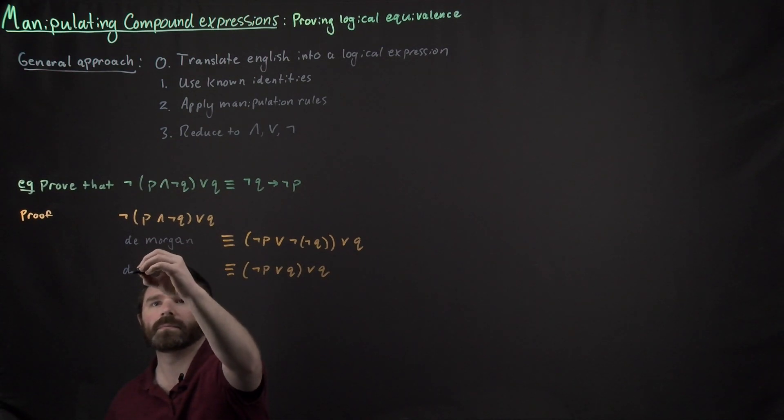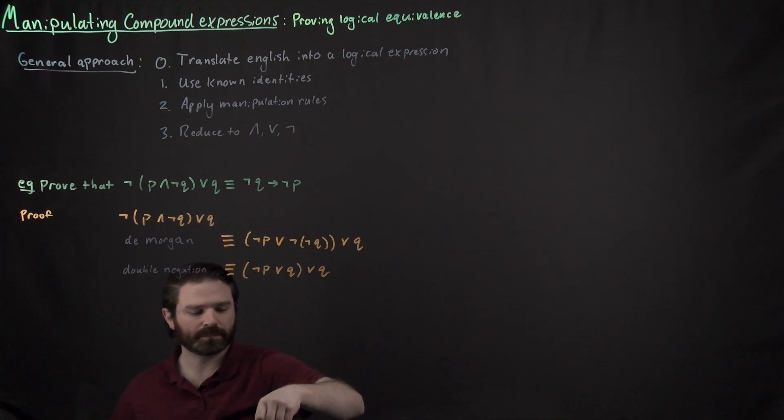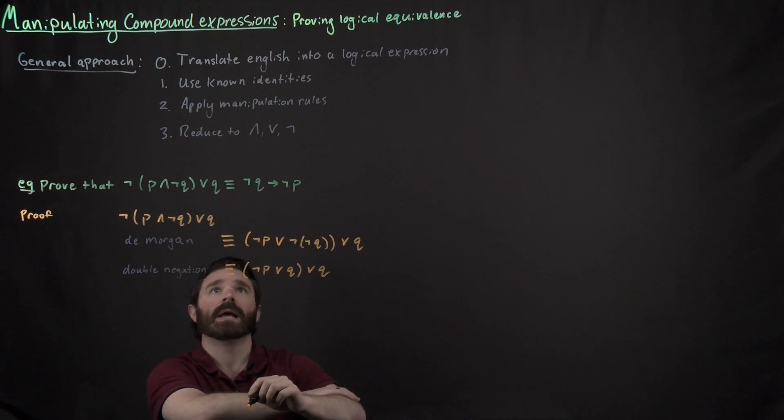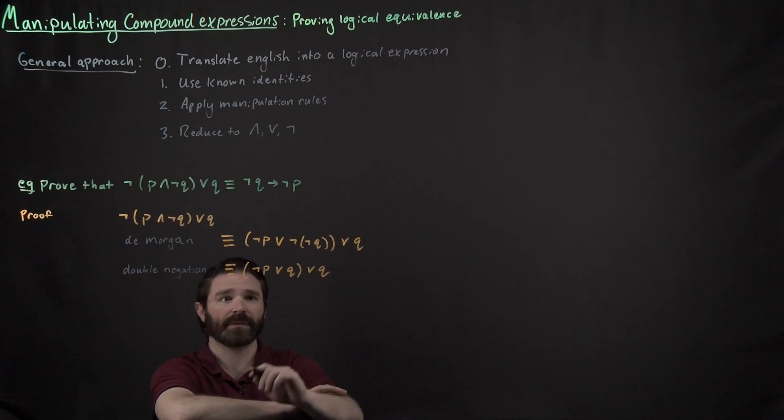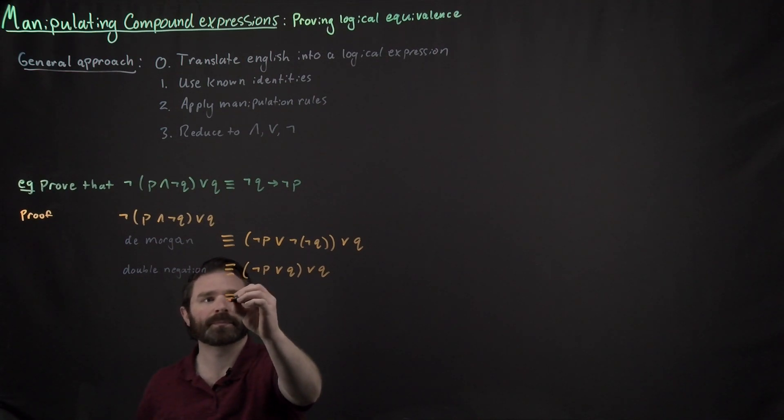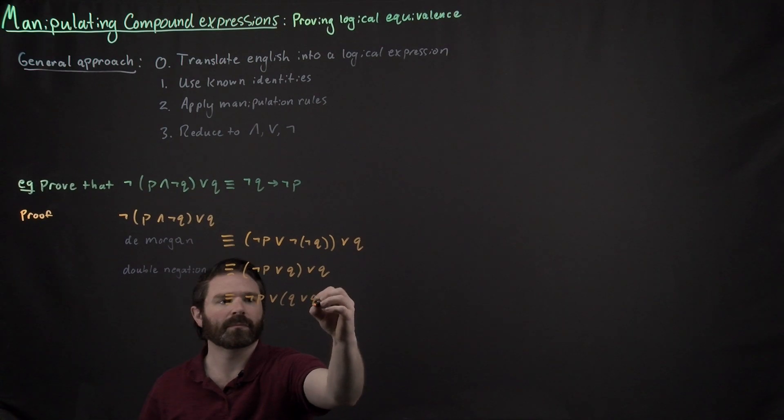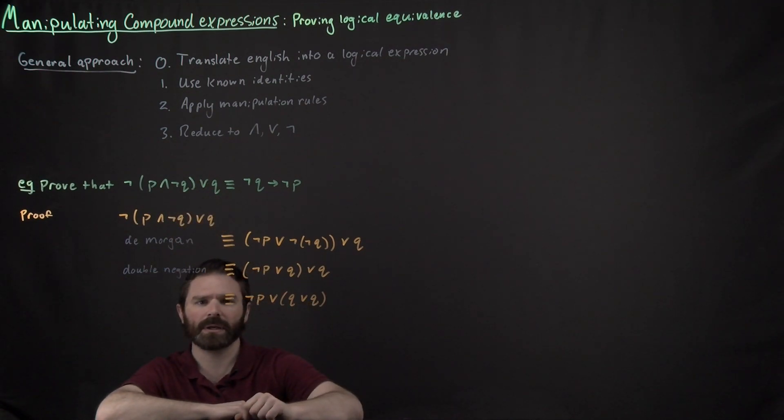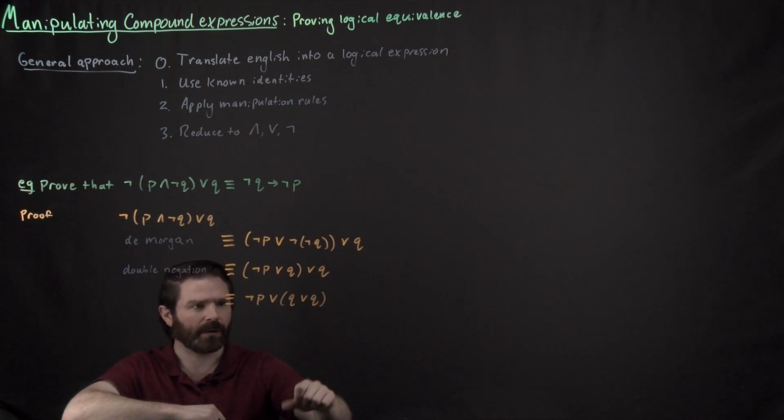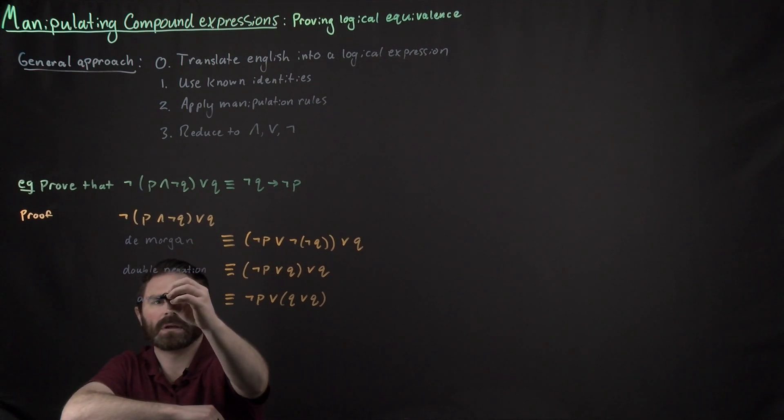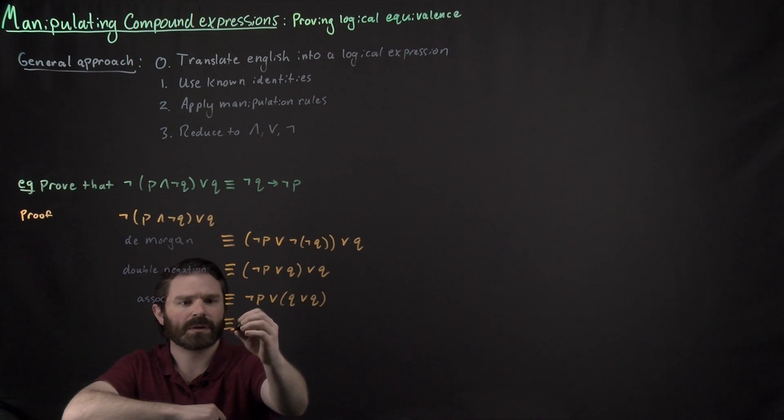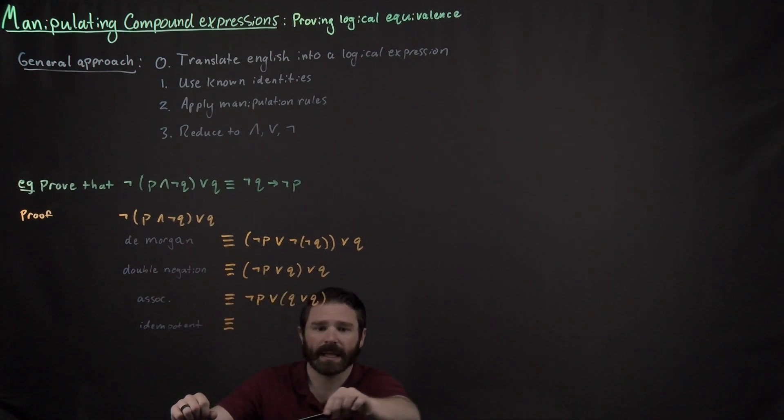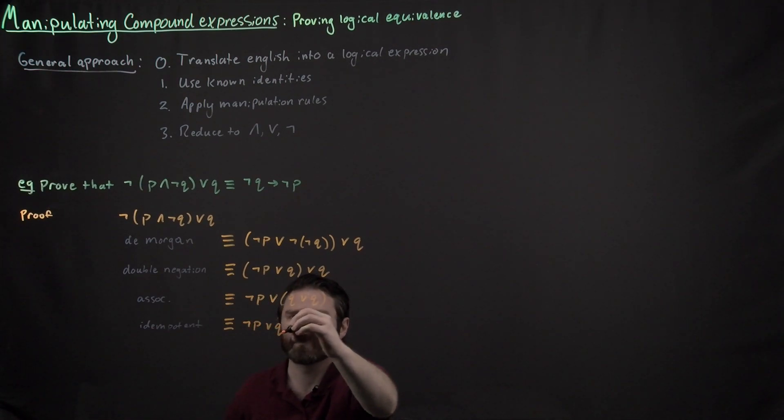So my known identity right here is double negation. And then what I see is I have an expression that only involves ORs right here. And so I can use one of my manipulation rules, in particular associativity right here, to regroup these parentheses. Excellent! So here I see a Q OR Q. I have a known identity that says Q OR Q is logically equivalent to just Q by itself. So, after using associativity, I'm going to use what's referred to as the idempotent law right here, to then rewrite this thing as NOT P OR Q.